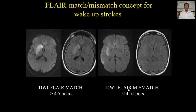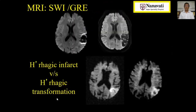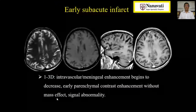Another important concept is FLAIR match and mismatch. When a patient has wake-up stroke, FLAIR is the savior. If it is FLAIR-negative and diffusion-positive, that means you are dealing with an infarct of less than 4.5 hours duration, which can be treated aggressively. If it is both FLAIR-positive and diffusion-positive, that means you are dealing with an infarct of more than 4.5 hours duration, so treatment must be less aggressive. Regarding hemorrhagic transformation: if it is less than 1 cm in one area, antiplatelet therapy can be continued; greater than that, antiplatelet therapy has to be stopped temporarily.